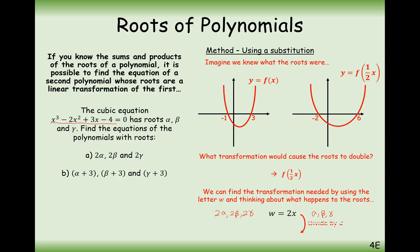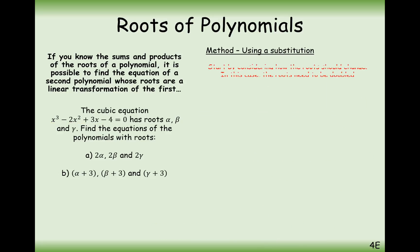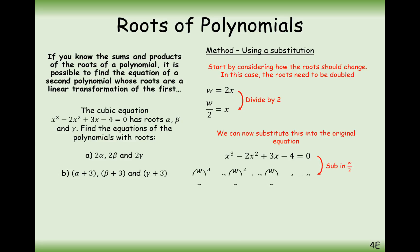And then we just rearrange it to get x in terms of w. So w over 2 equals x. So what we're effectively going to do now is substitute in x with w over 2. So take your original equation and substitute in w over 2. So it's effectively the opposite or the inverse transformation that we're going to be substituting in.